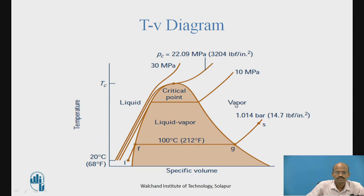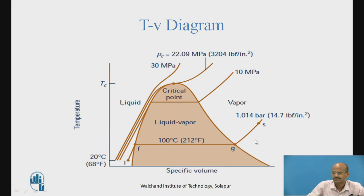In previous sessions, we have studied the temperature entropy diagram. Now, this is the temperature specific volume diagram. There is a change in the saturation dome shape. The point 1 to F is an isobaric process. Water is in the liquid phase. The saturated liquid curve — the left-hand region is the liquid region. The area inside this dome shape is the wet region, and the upper region is the superheated vapor region.